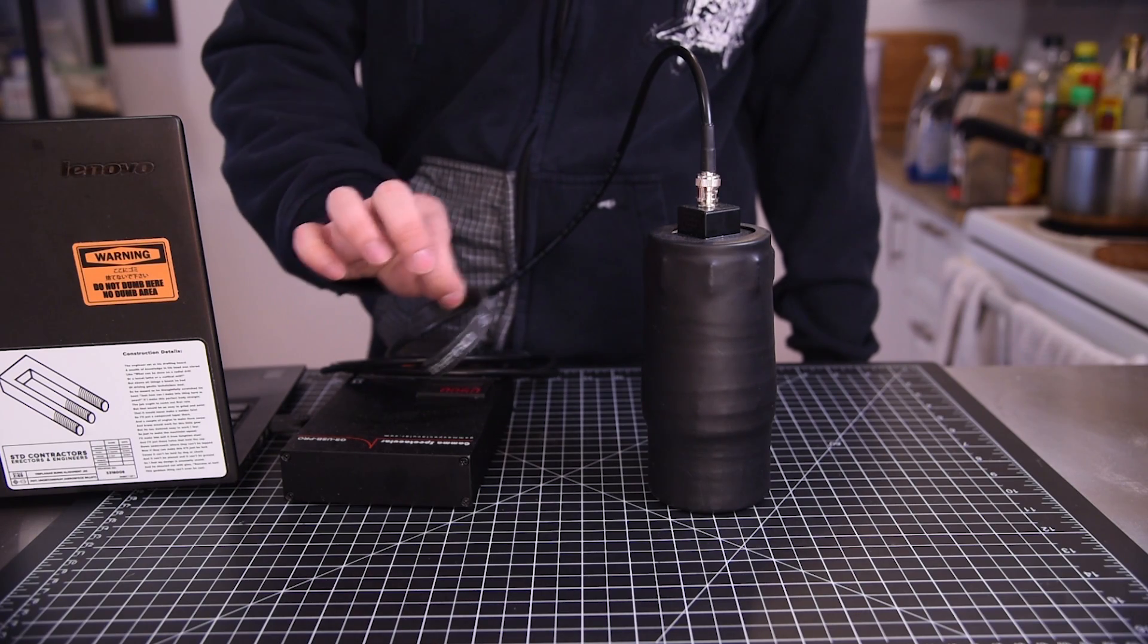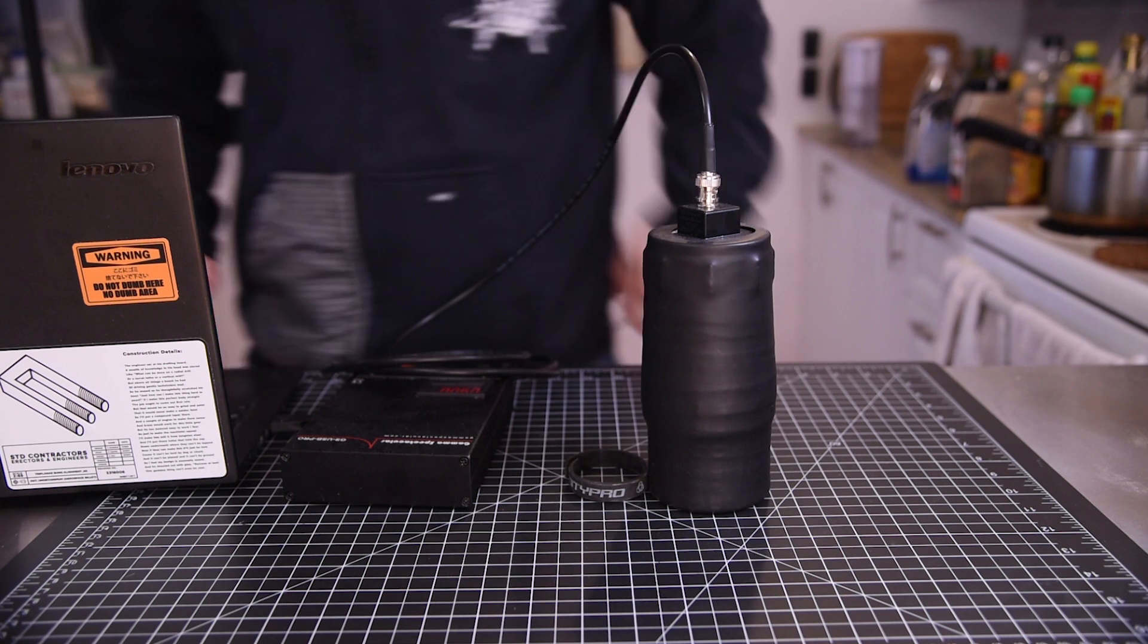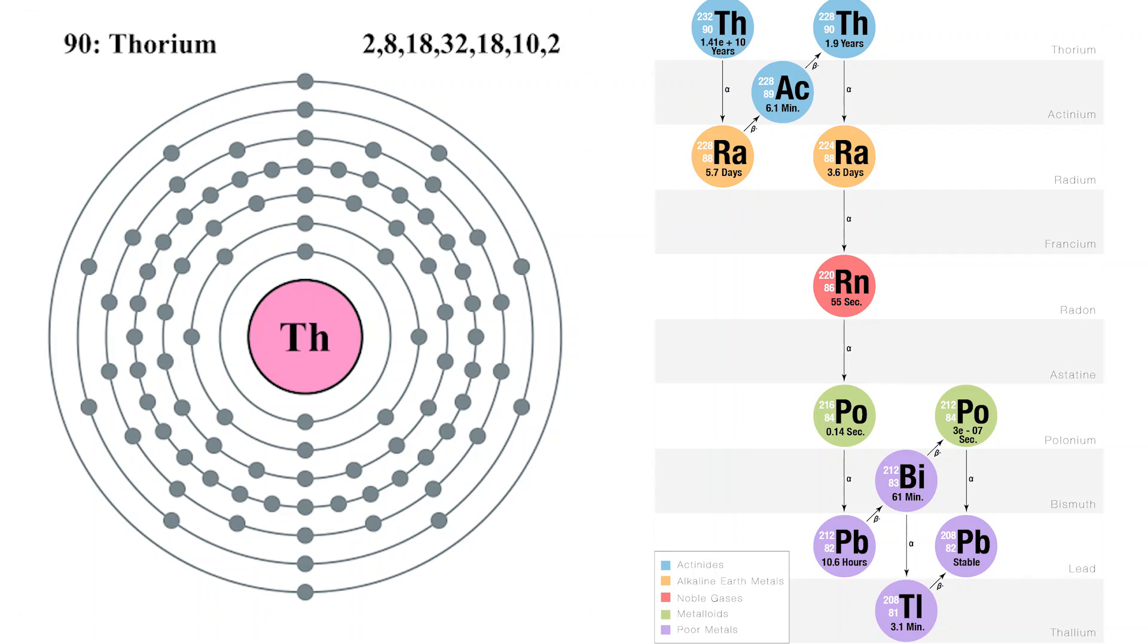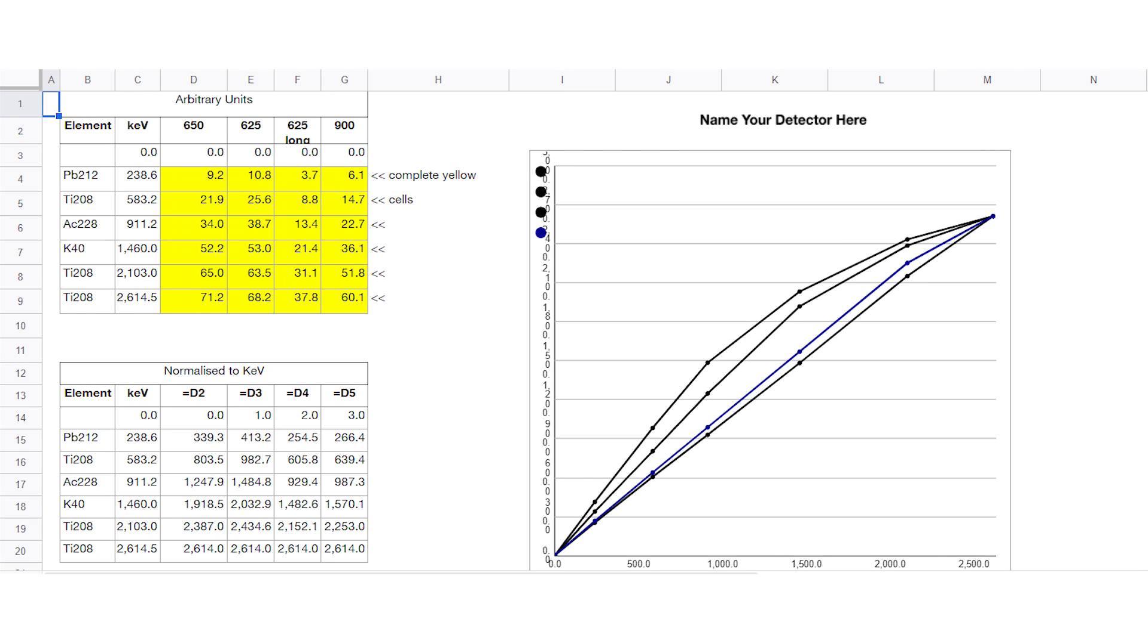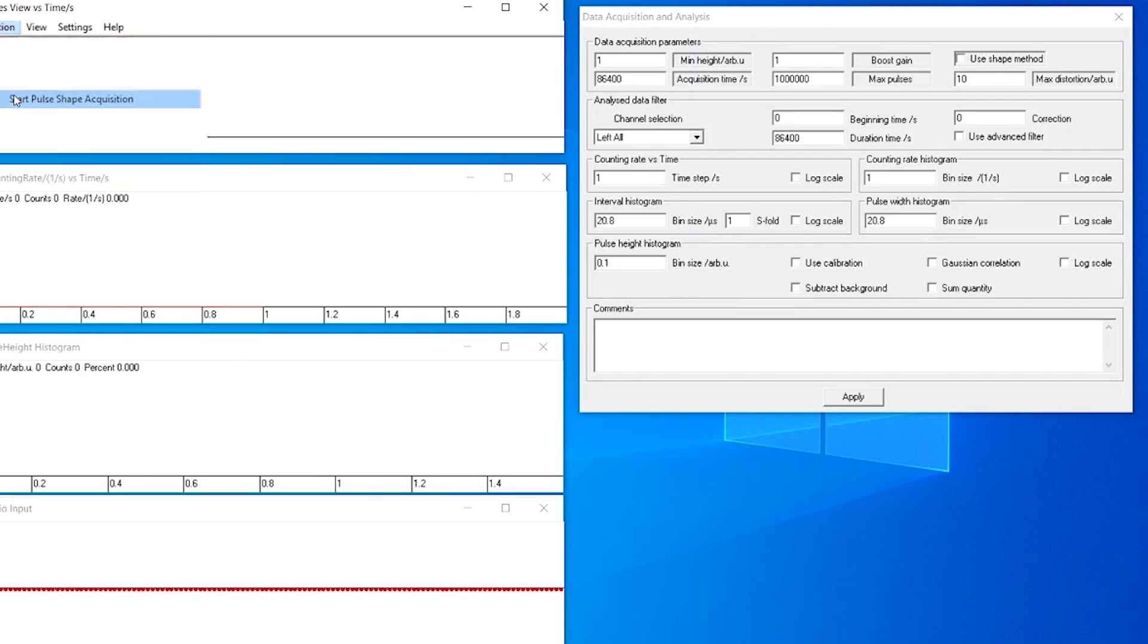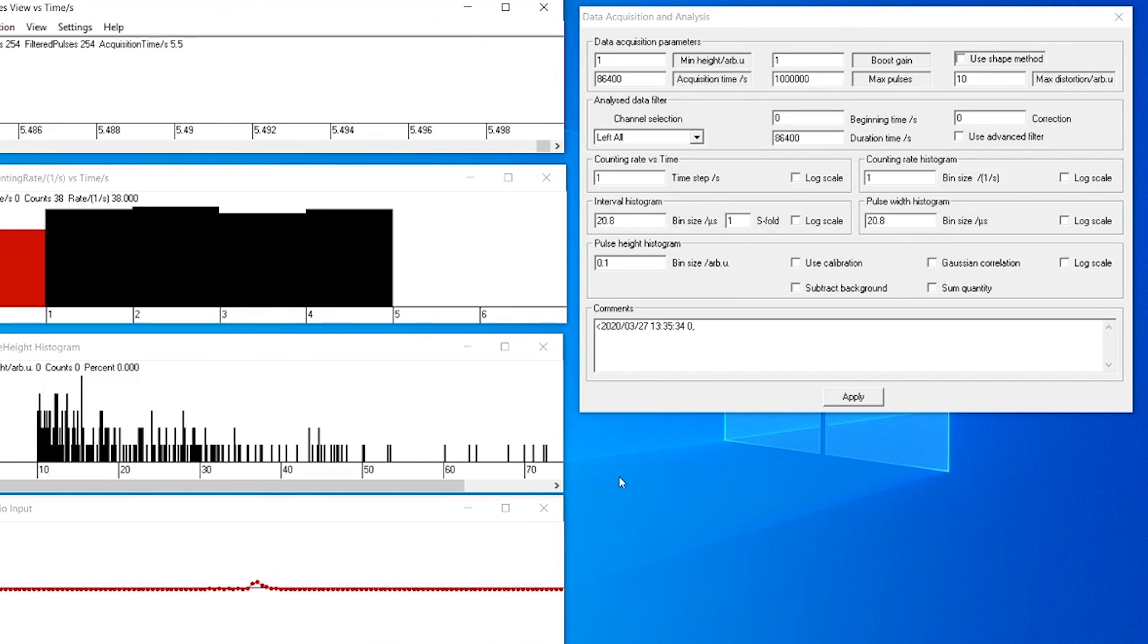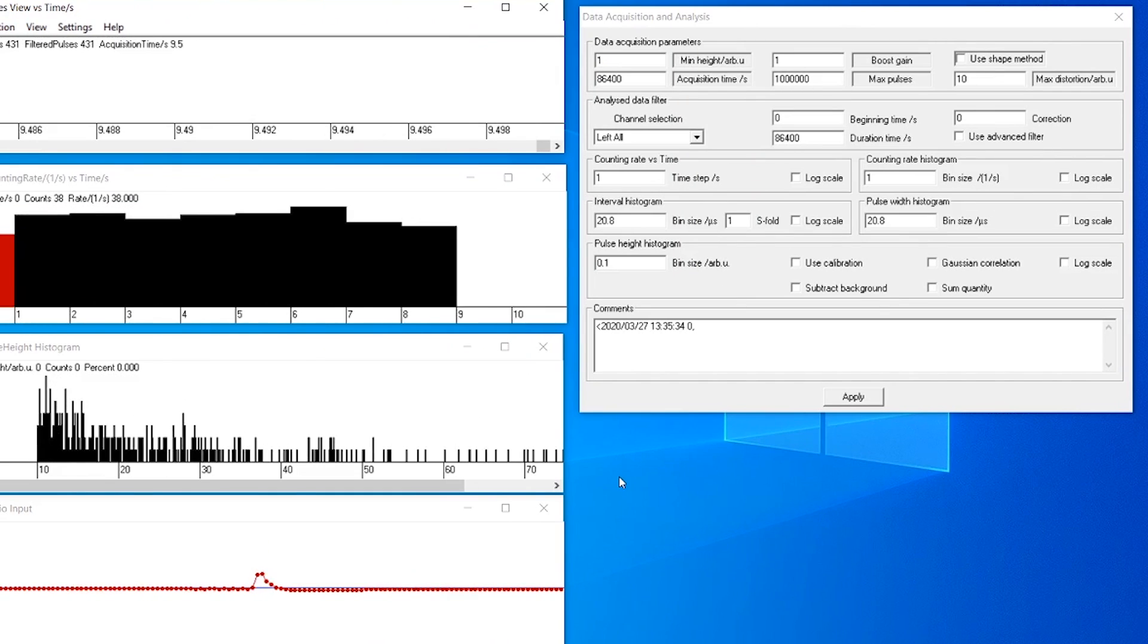The first thing I had to do was calibrate the detector, so I used one of the thorium-laced bracelets from the last video to do that. Thorium, or rather the things it decays into, put out a variety of gamma rays of known energy, so I can use them to calibrate my detector. Steven provided me with a little calibration sheet which I've linked to below that lets you adjust the voltage you're feeding into the tube until the peaks are spread out in a linear fashion across the whole spectrum. This is important so that anything that I measure will give me an accurate reading of what energy the gamma ray was. I'm using a program called PRA, which takes the audio signal that the Gamma Spectacular puts out, and turns it into a spectrum.